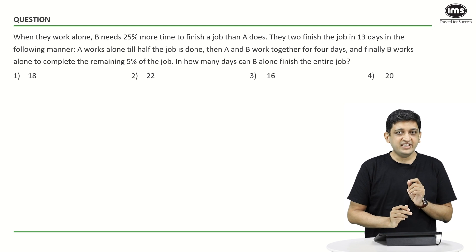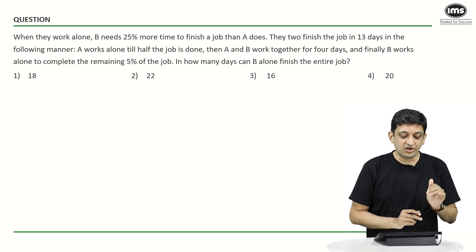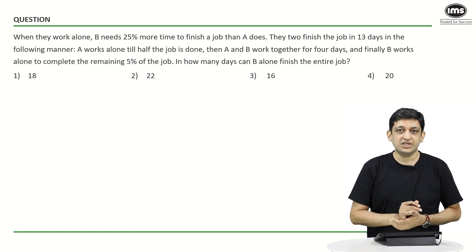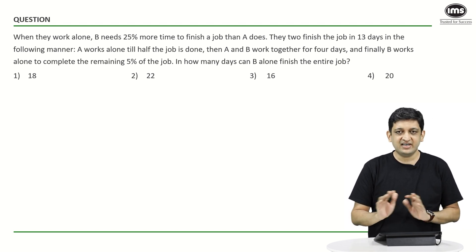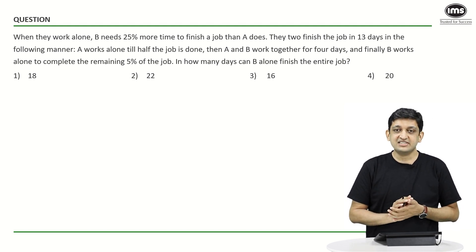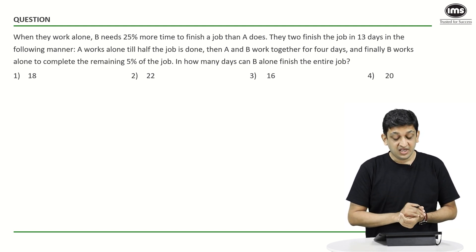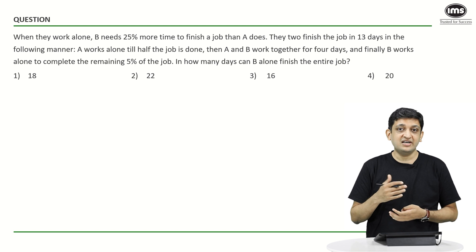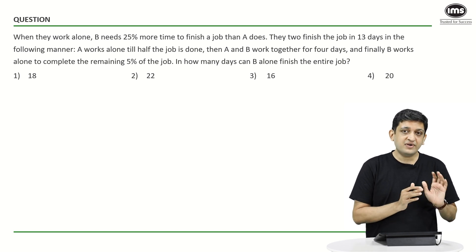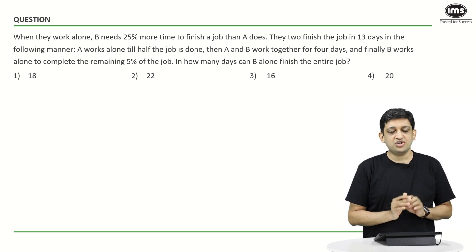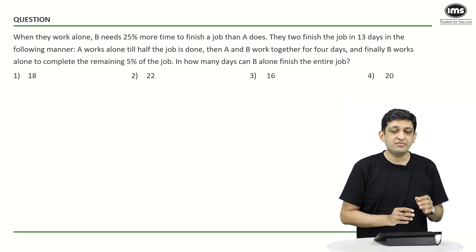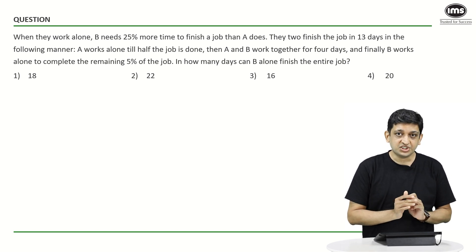Now we know that B needs 25% more time than A to finish that particular job. So let's say for example, I am just taking a random example here. If A does this particular job in 100 days, then B will need 25% more time to do this job, meaning that B will do the same job in 125 days. That is the logic.